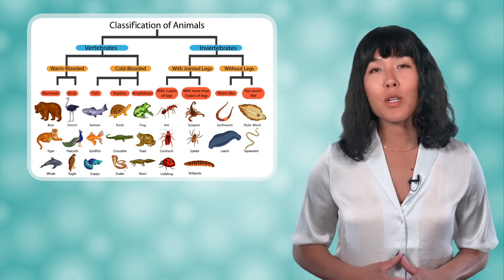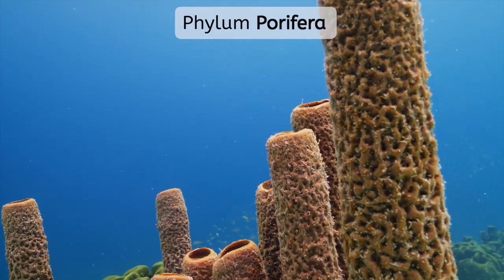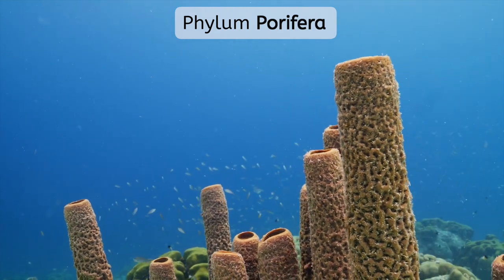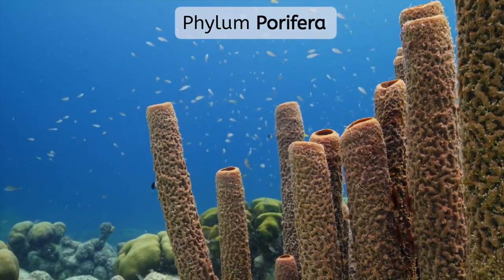The animal kingdom, just like the other kingdoms, is divided into many phyla. There are around 35 recognized phyla in the animal kingdom. It's sometimes common to study animals in groups that don't necessarily correspond to their phyla, such as grouping animals into vertebrates and invertebrates. But it's good to be familiar with the scientific classifications of phyla as well, so we'll take a look at just a few of them today. The phylum that contains the simplest animals is Porifera. The name comes from 'por' because these animals are filled with many pores to allow water to flow through and hopefully bring nutrients with it. Common organisms in this phylum include colorful sponges found on the ocean floor.